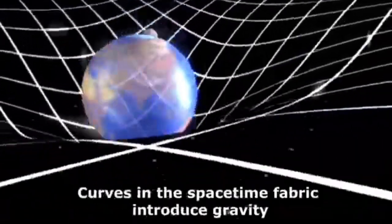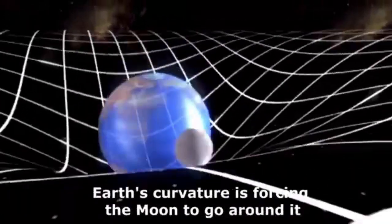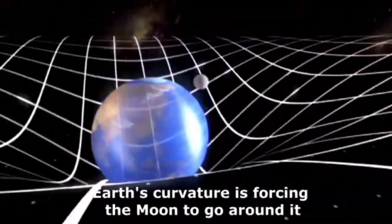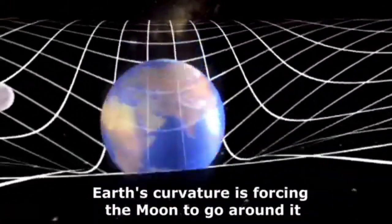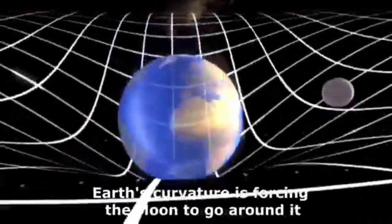Earth's curvature is forcing the moon to go around it, and the same force causes the earth to go around the sun.